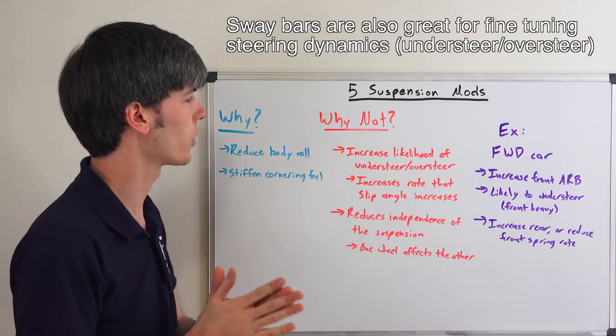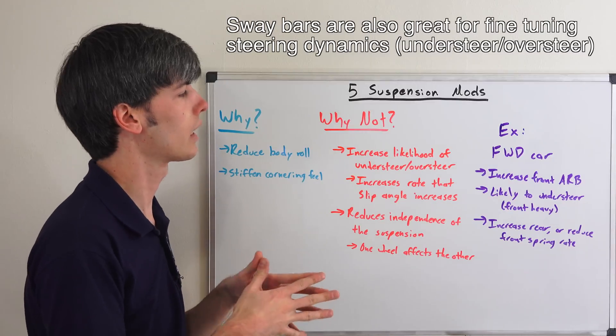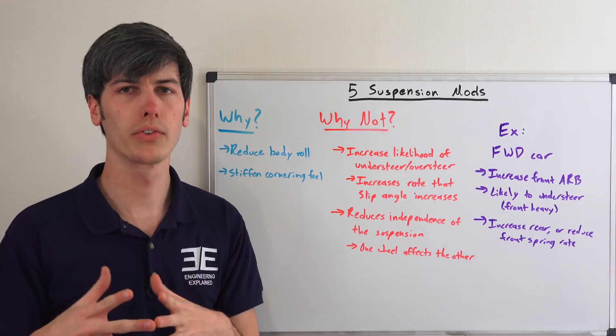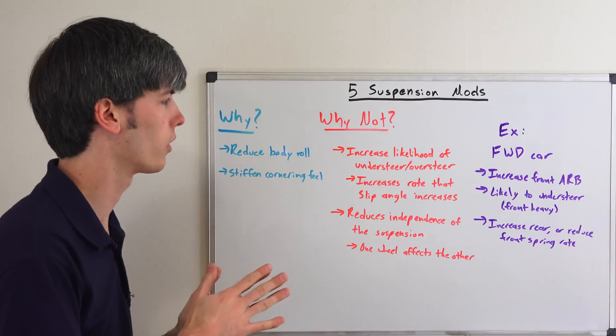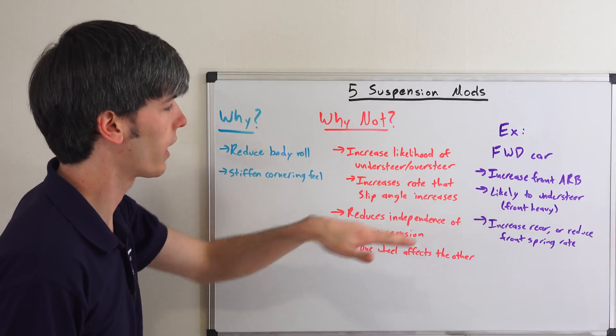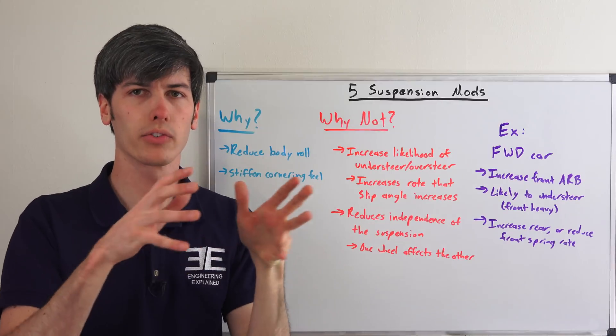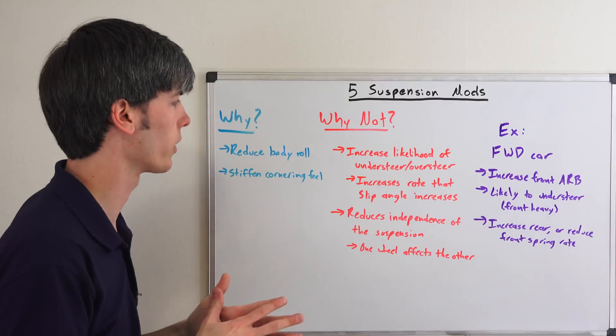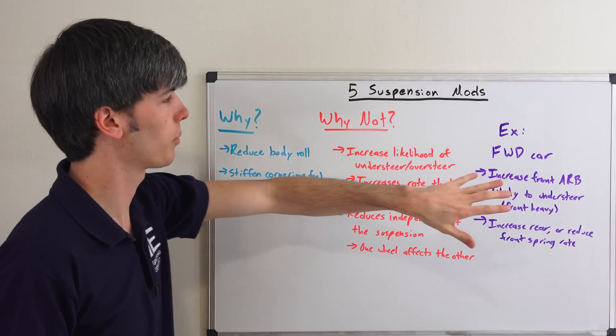But what are the reasons why you may not want to do this? Well, by installing a larger anti-roll bar, you're increasing the likelihood of understeer or oversteer depending on which axle you put it on. What you're doing by putting that anti-roll bar on whichever axle is increasing the rate that the slip angle of those tires on that axle are going to increase.